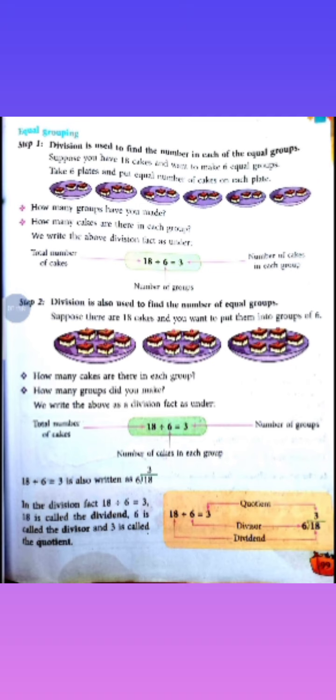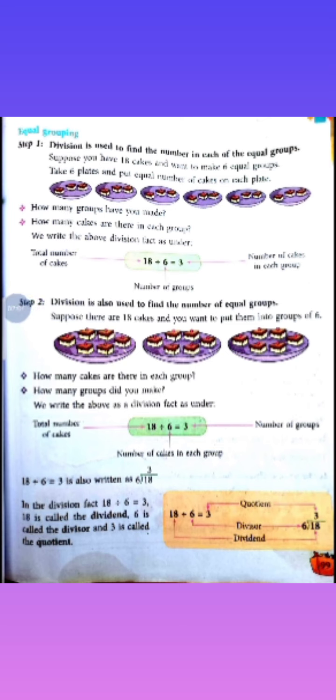Total number of cakes: 18. And number of cakes in each group: 6. So, 18 divided by 6 is equal to 3. So, 3 is the number of groups. Okay?